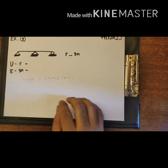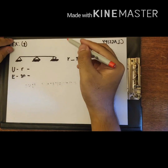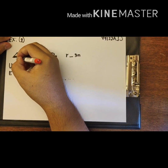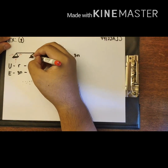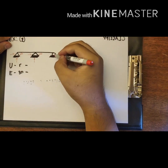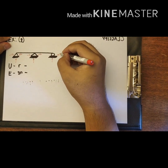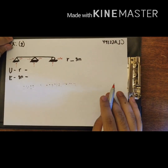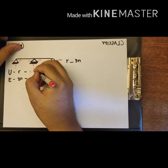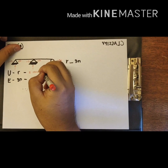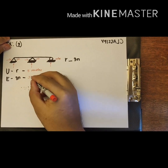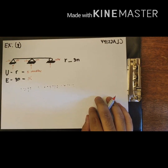R in this problem refers to the reaction supports. The first support is a pin, which consists of 2 reactions. There is also a second pin, which also consists of 2 reactions. And there is a roller, which consists of 1 reaction. In total, we have 5 reactions. For E, we have 3N, where 3 is a constant multiplied by the number of segments of the beam.